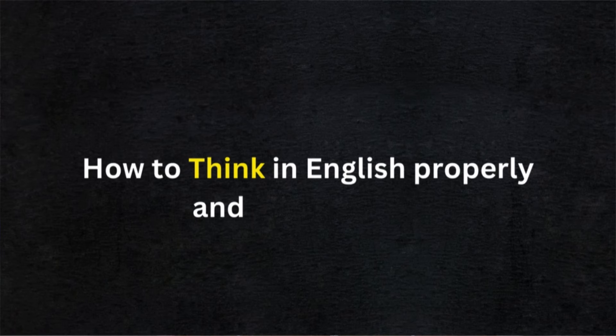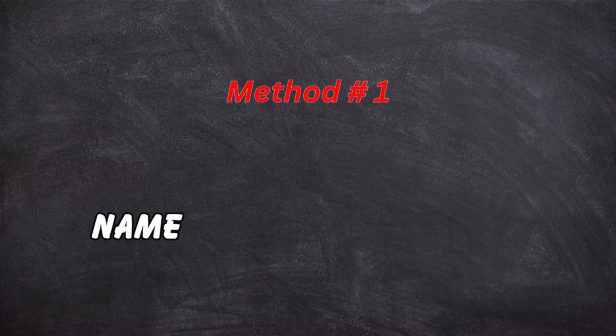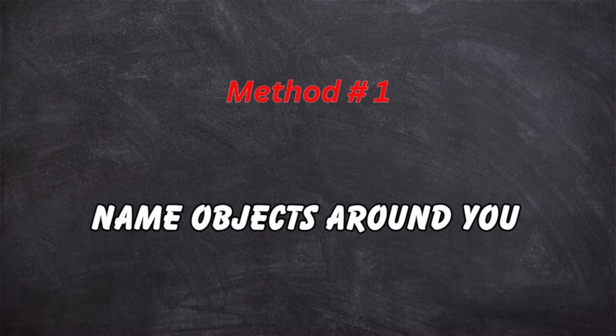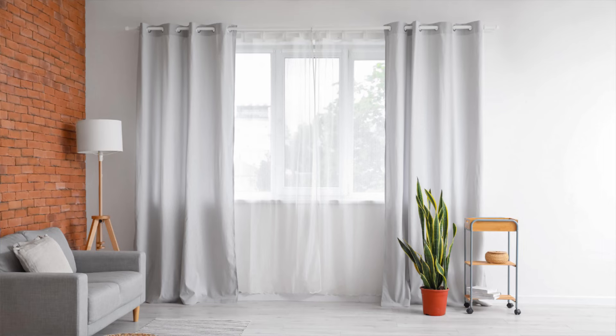So how do you think in English properly and effectively? The first step is to name objects around you. This is a very simple and easy way of thinking in English. All you do is look around you and start naming the things you see. For example: this is a headphone, there's my coffee mug, there's a curtain, there's a window behind it, this is my work desk, those are chairs. You get the idea — name different objects around you.